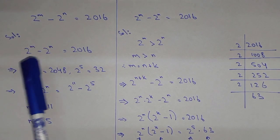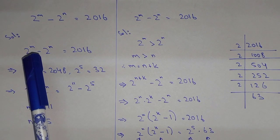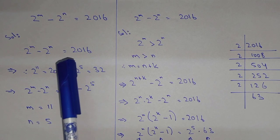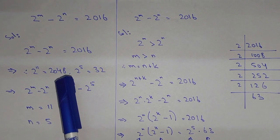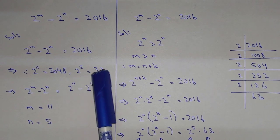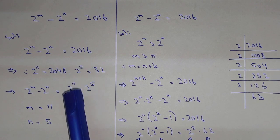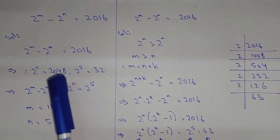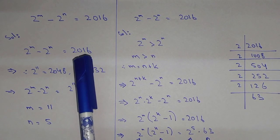There can be several methods but we have to find the easiest one. So 2 power m minus 2 power n equals 2016. We know that 2 power 11 is 2048 and 2 power 5 is 32. So we can write 2016 as 2 power 11 minus 2 power 5, because 2048 minus 32 equals 2016.